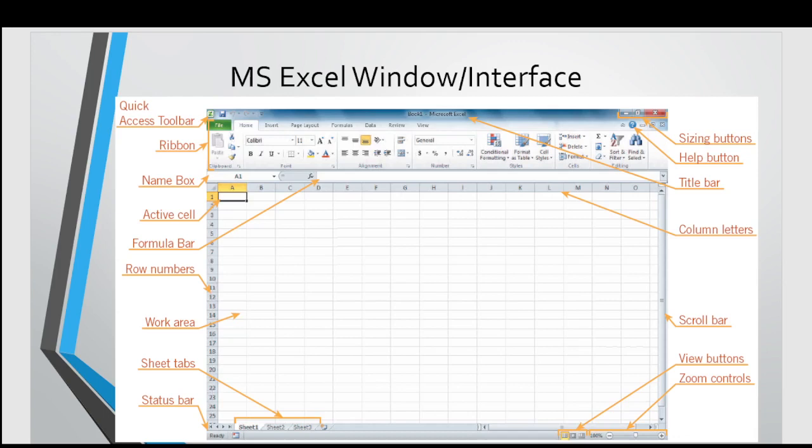And just below the menu bar, there is a ribbon. And ribbon has many groups. There is also a name box. When you click on the cell, its address displays here.